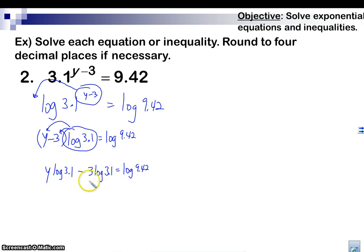Now, we're going to add 3 log 3.1 to both sides. Then we're going to end up with y log 3.1 equals log 9.42 plus log 3.1. And then we're going to divide log 3.1 by the whole side here. This is going to be our exact answer for y.